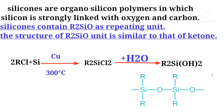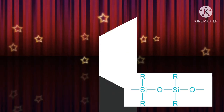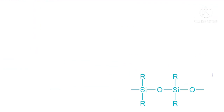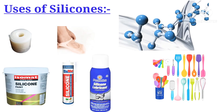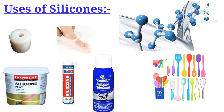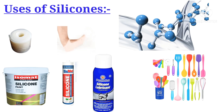These organochlorosilanes undergo hydrolysis to produce R2Si(OH)2 silanols, which then form silicones. The uses of silicones include the preparation of silicone rubbers.